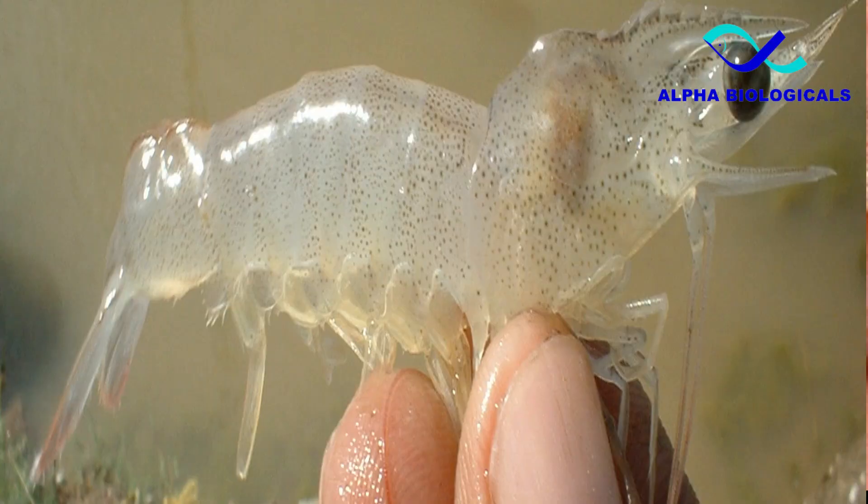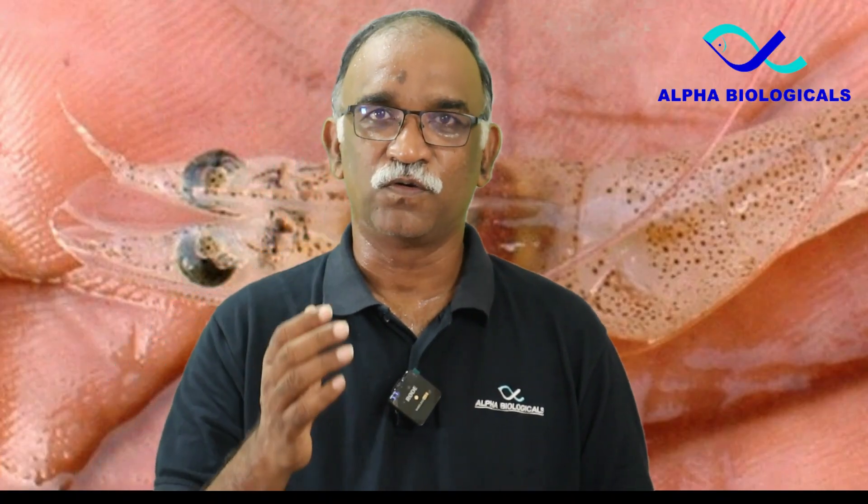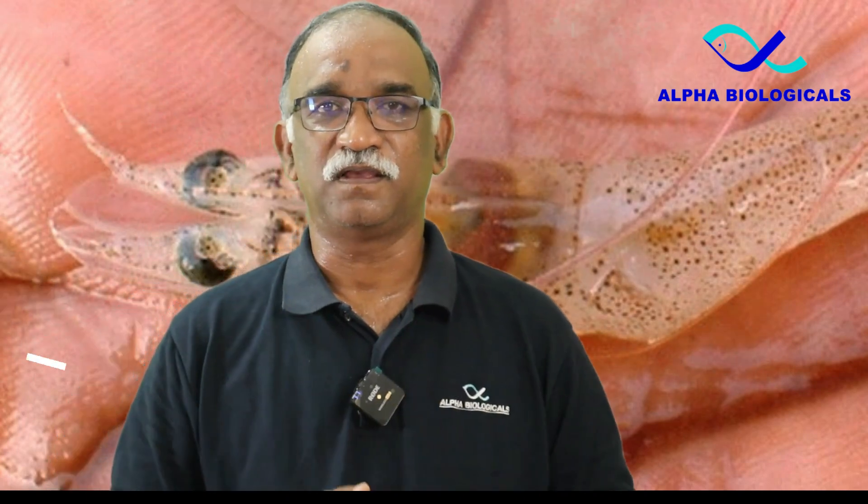Shrimp ponds affected with IHHNV may exhibit deformities mainly in the rostrum region and sometimes in the entire body. Shrimp with IHHNV infection also show high size variation and poor growth.